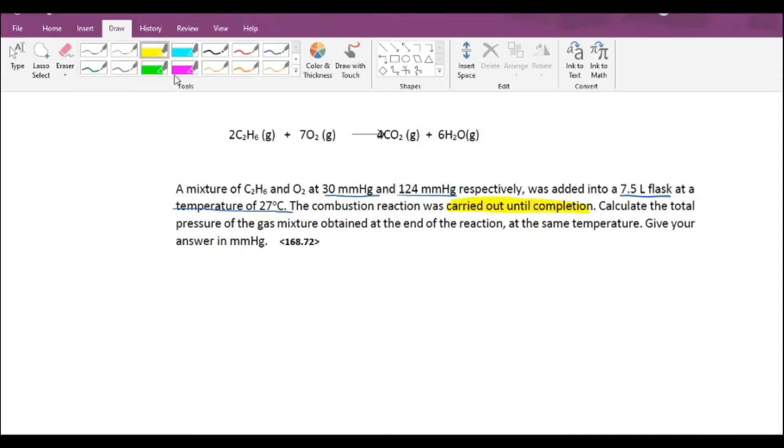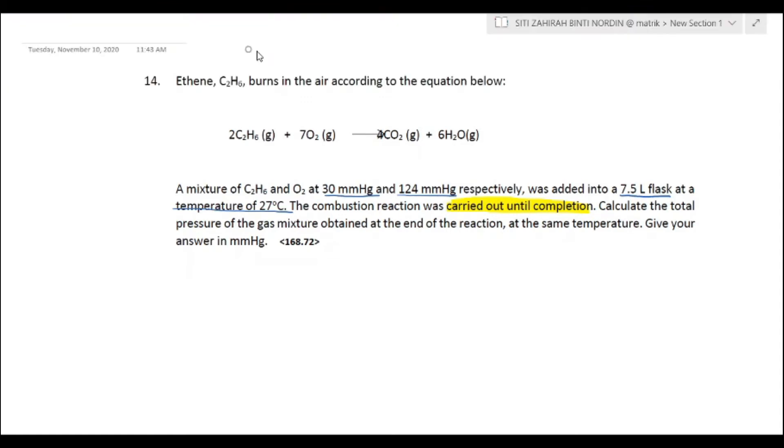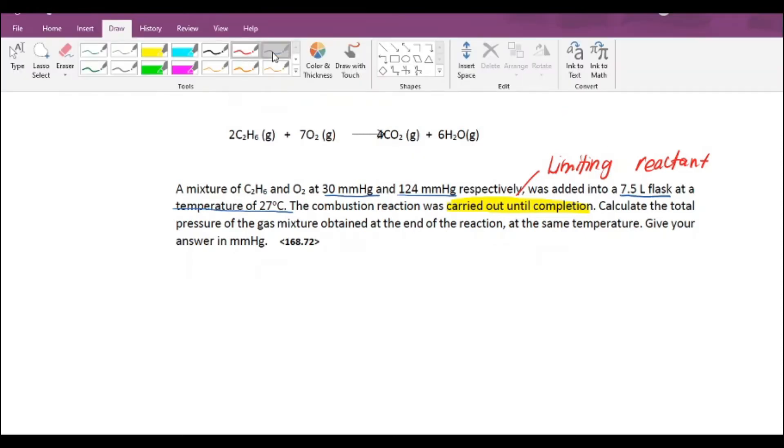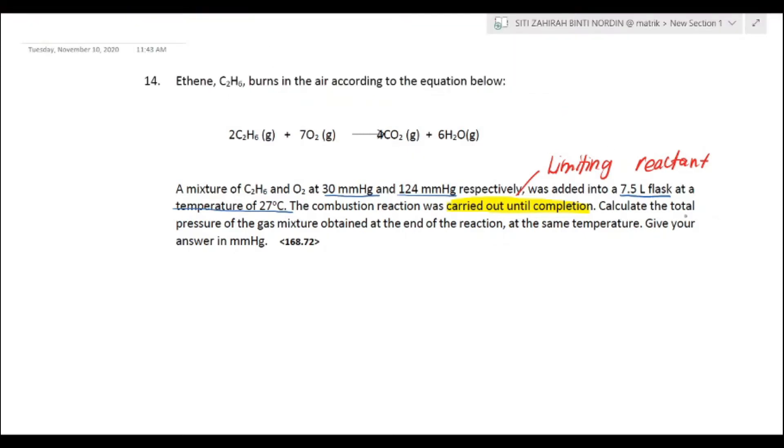Please highlight this in red. Carried out until completion. This means that one of your reactants must be your limiting reactant. You have to figure out your limiting reactant first. So calculate the total pressure.